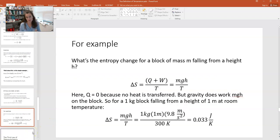What's the entropy change for a block of mass m falling from a height h? So what we would have then is if you're just dropping something, you're going to assume that you're not adding a significant amount of heat to the system. No heat is really being transferred here. So q is zero. So then the only thing that contributes to this entropy change would be the expression for the work. Now gravity actually does work mgh on the block.